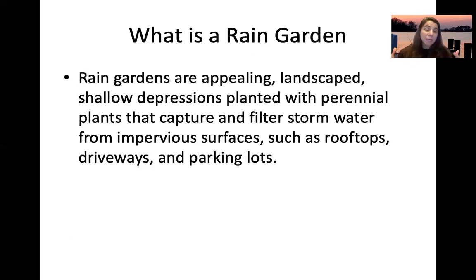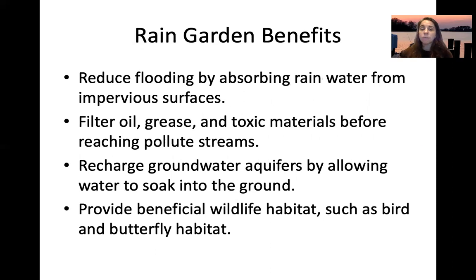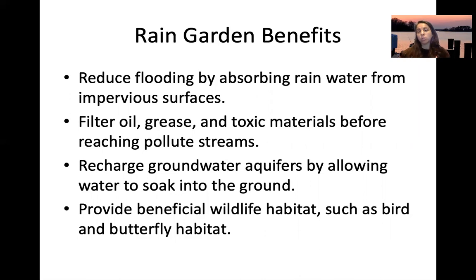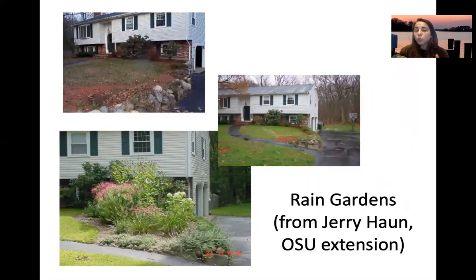Rain gardens are appealing landscape shallow depressions planted with perennial plants that capture and filter stormwater from impervious surfaces such as rooftops, driveways, and parking lots. They reduce flooding by absorbing rainwater, filter oil, grease, and toxic materials before they reach streams, recharge groundwater, and provide beneficial wildlife habitats such as bird and butterfly habitat.